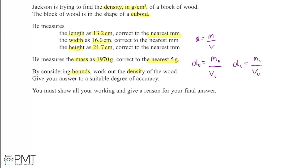Starting with mass: he measures 1970 grams correct to the nearest five grams. We divide five by two to get 2.5, then go 2.5 above and below 1970. So the upper bound of mass is 1970 + 2.5 = 1972.5 grams, and the lower bound is 1970 − 2.5 = 1967.5 grams.